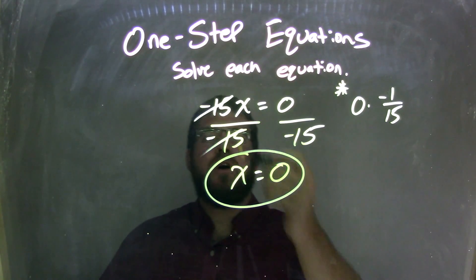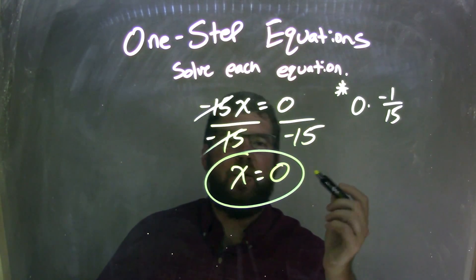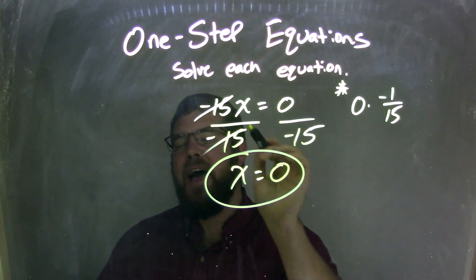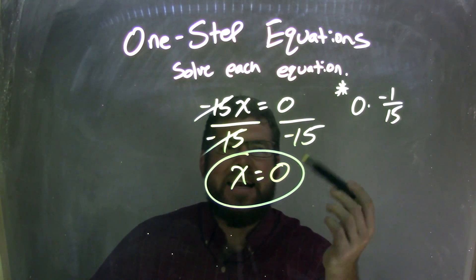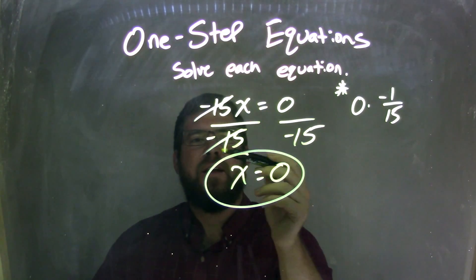Let's recap. We started with negative 15x equals 0. I realized that negative 15x is the same thing as negative 15 times x, so I divided by negative 15 on both sides. By doing so, I canceled out the negative 15, so I'm left with just x.